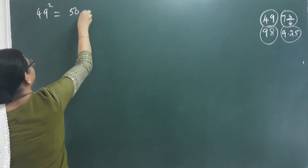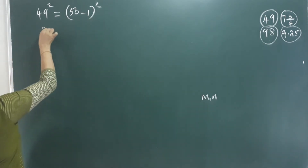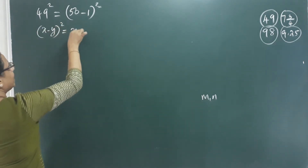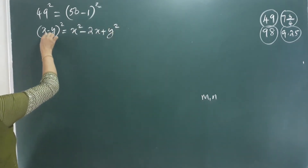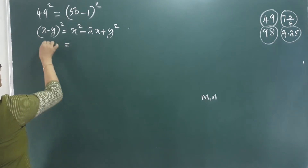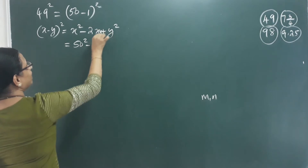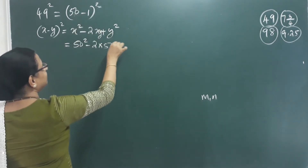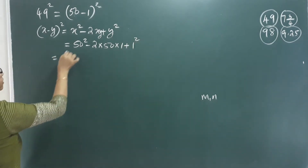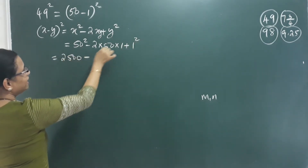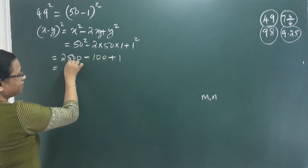49 is written as 50 minus 1, whole square. This is x minus y whole square, which is equal to x square minus 2xy plus y square. This is the formula. So we get 50 square minus 2 into 50 into 1 plus 1 square, that is 2500 minus 100 plus 1.